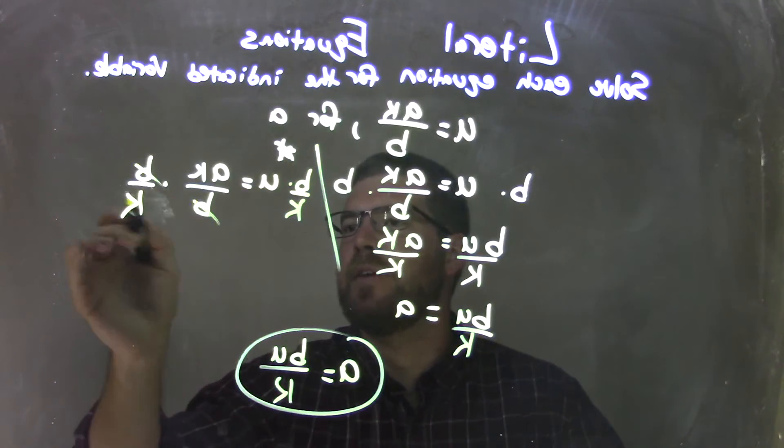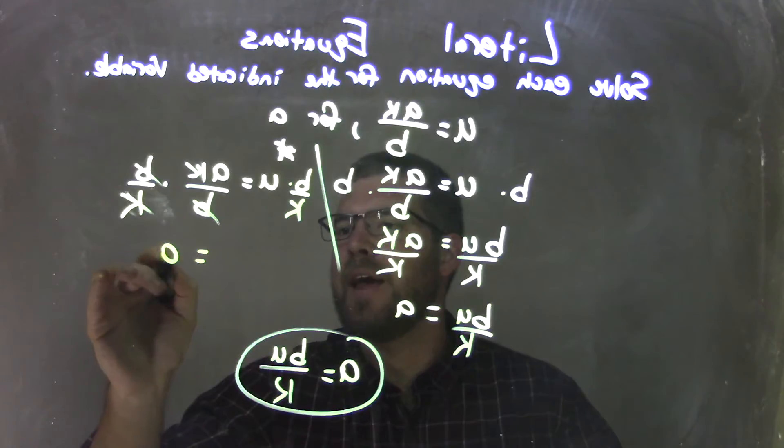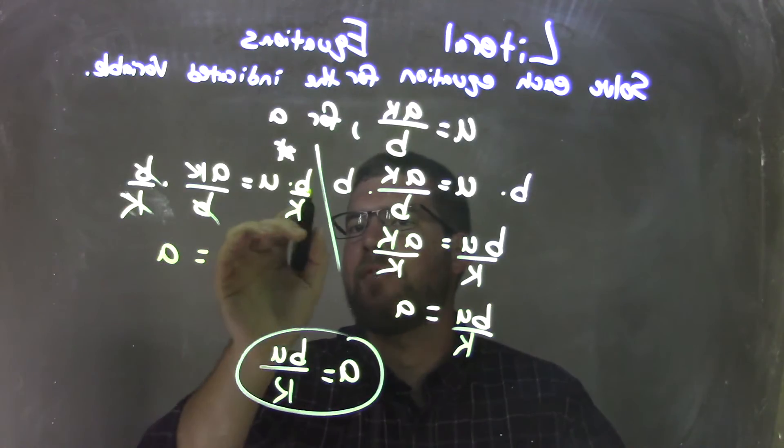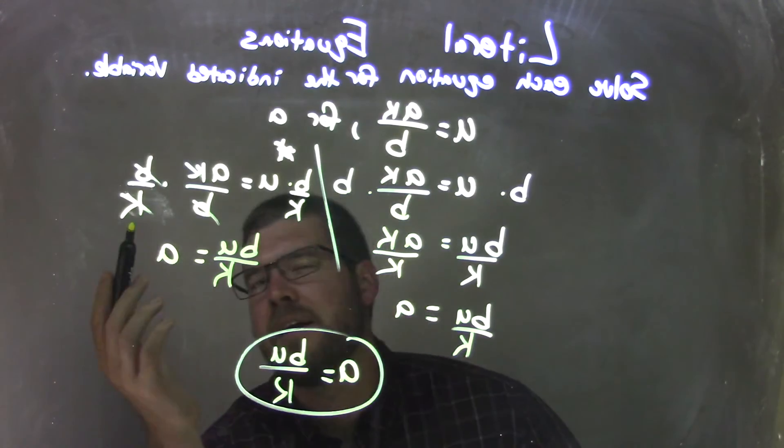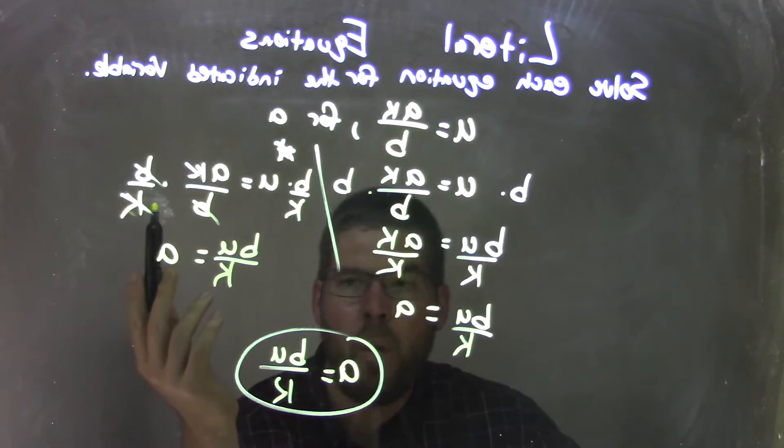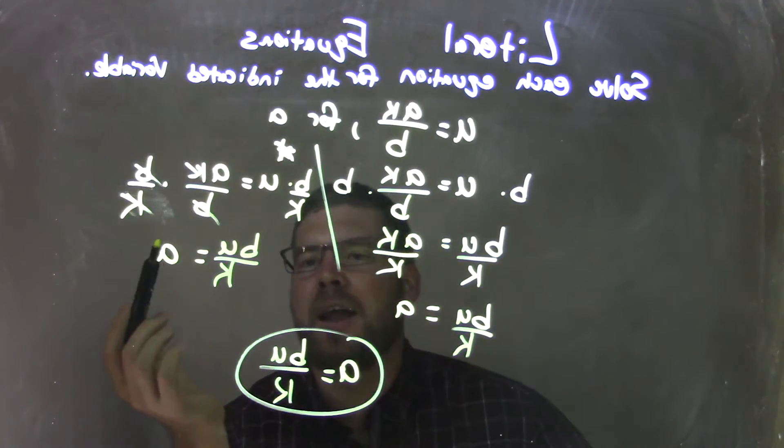What that does eliminates the B's, eliminates the K's, leaving me with an A by itself here and then I have multiply across the top BU over K. And so by doing that fraction it really is like taking these two steps and doing it one step.